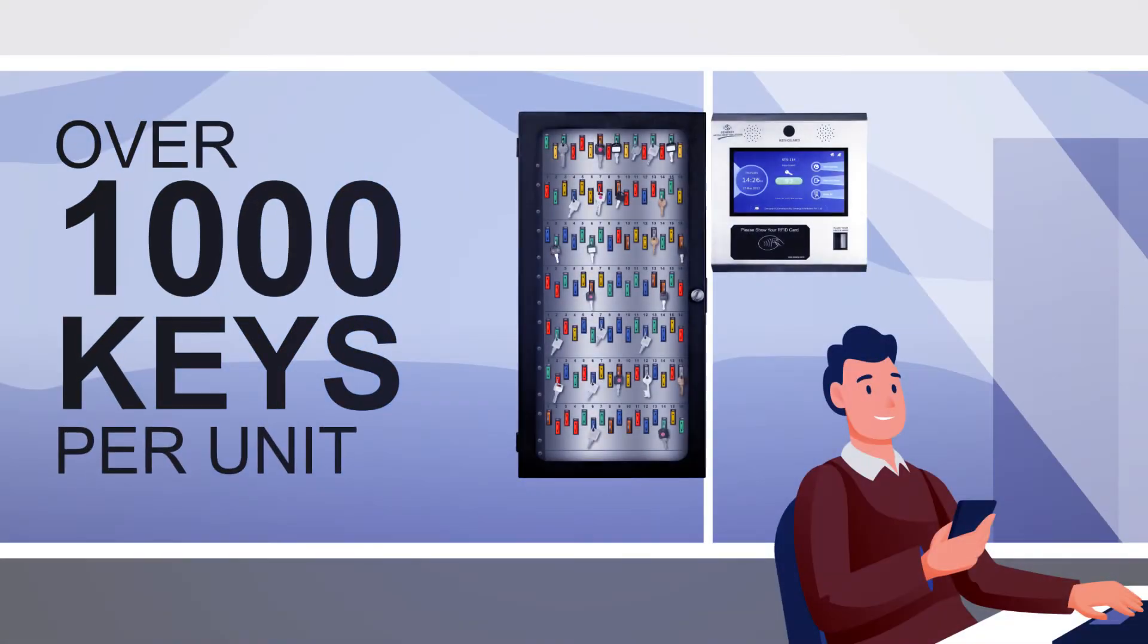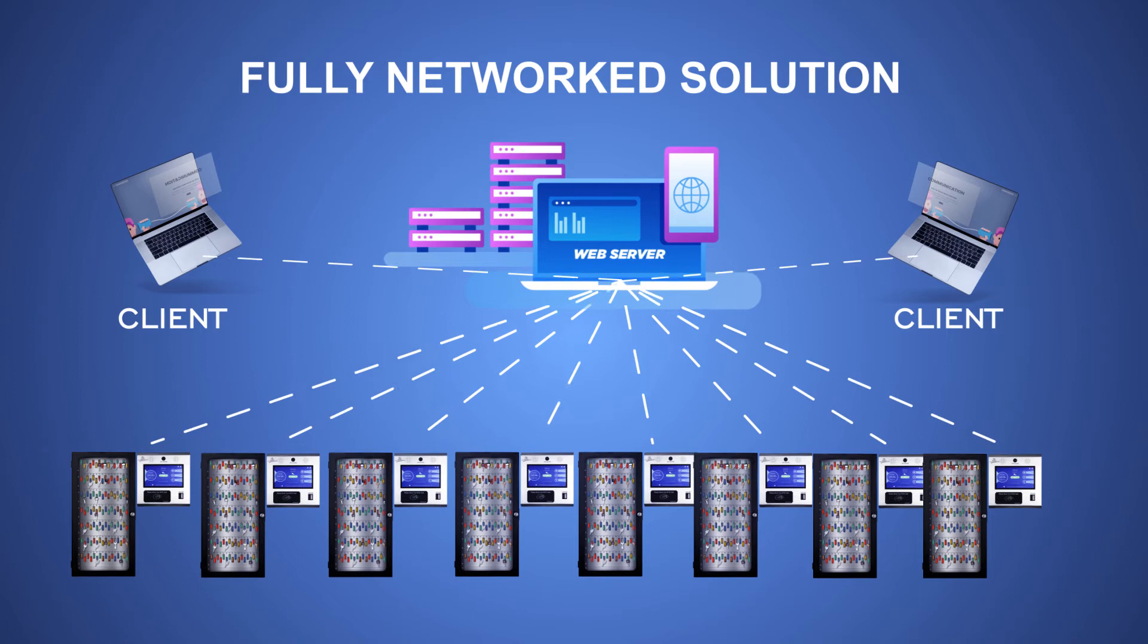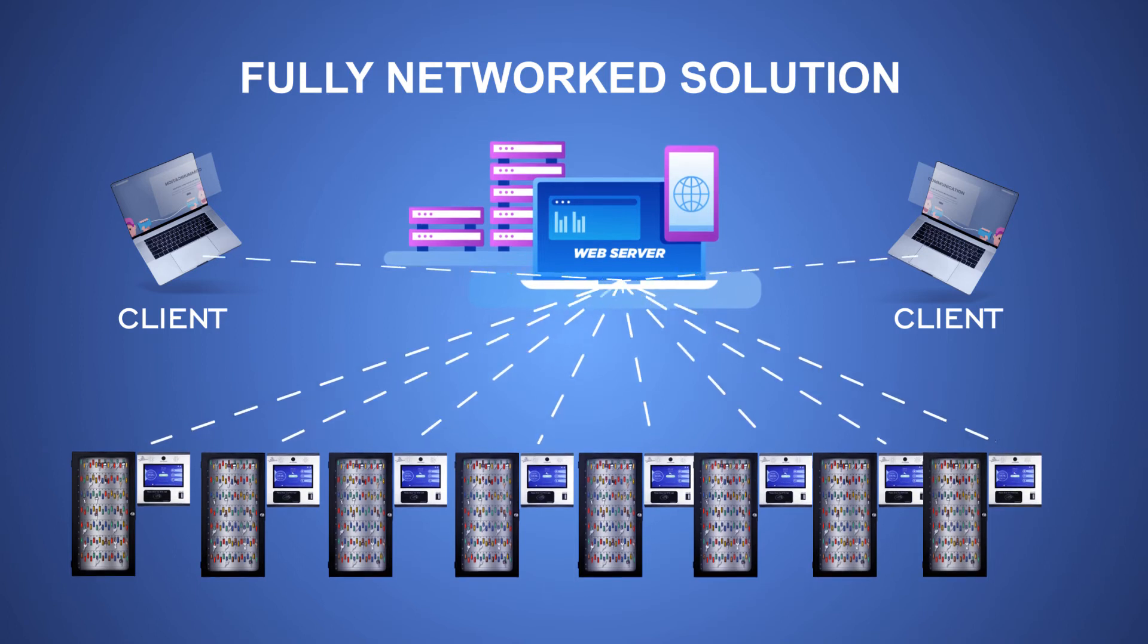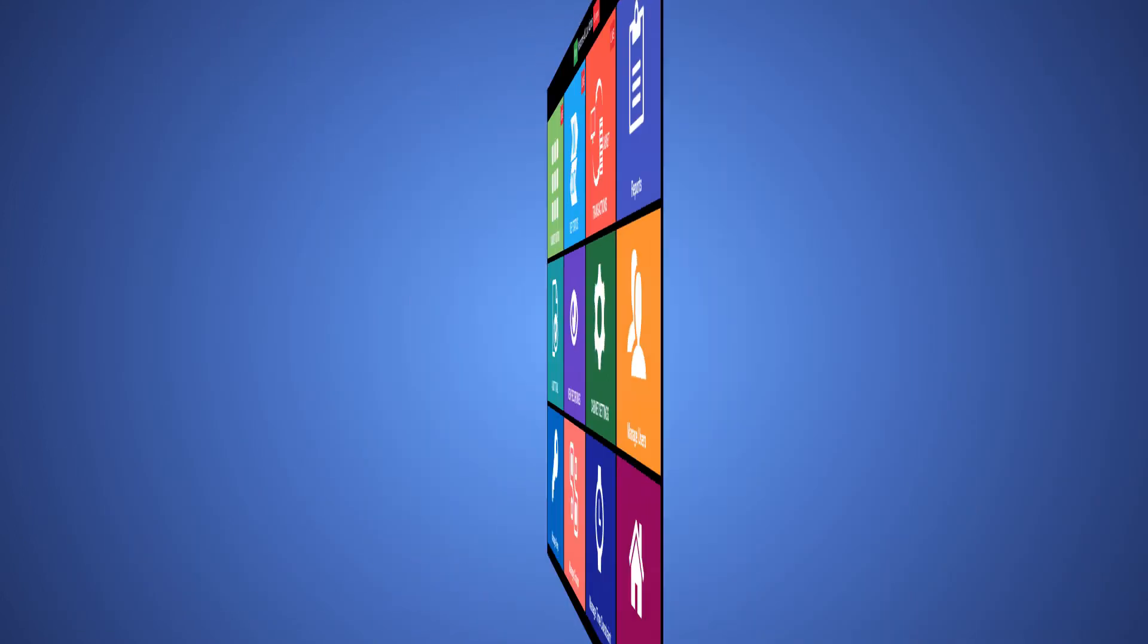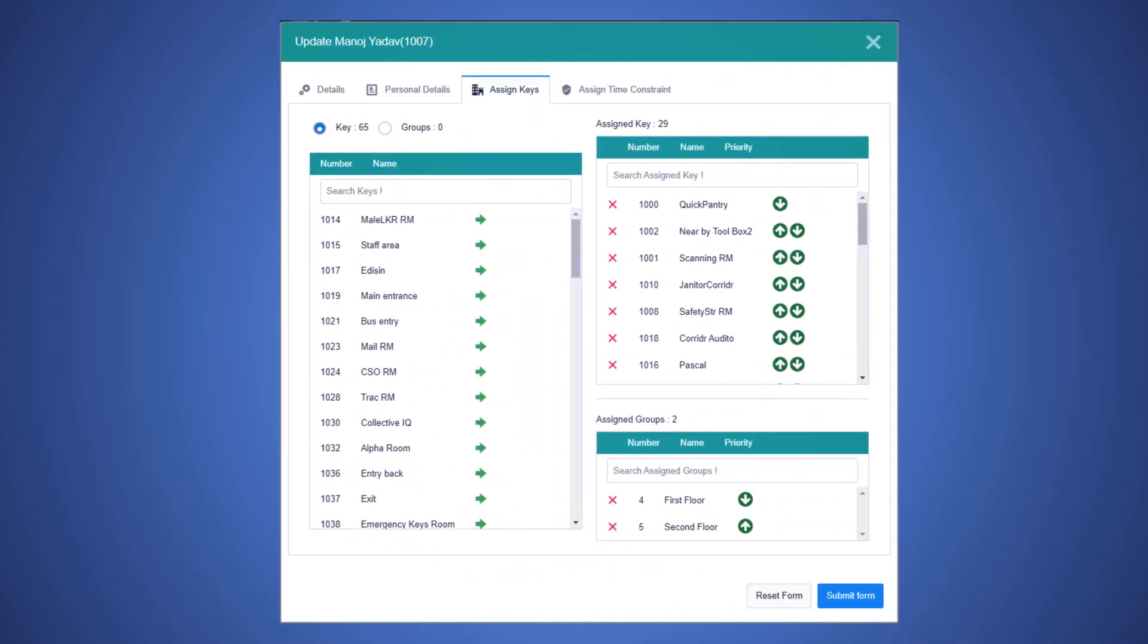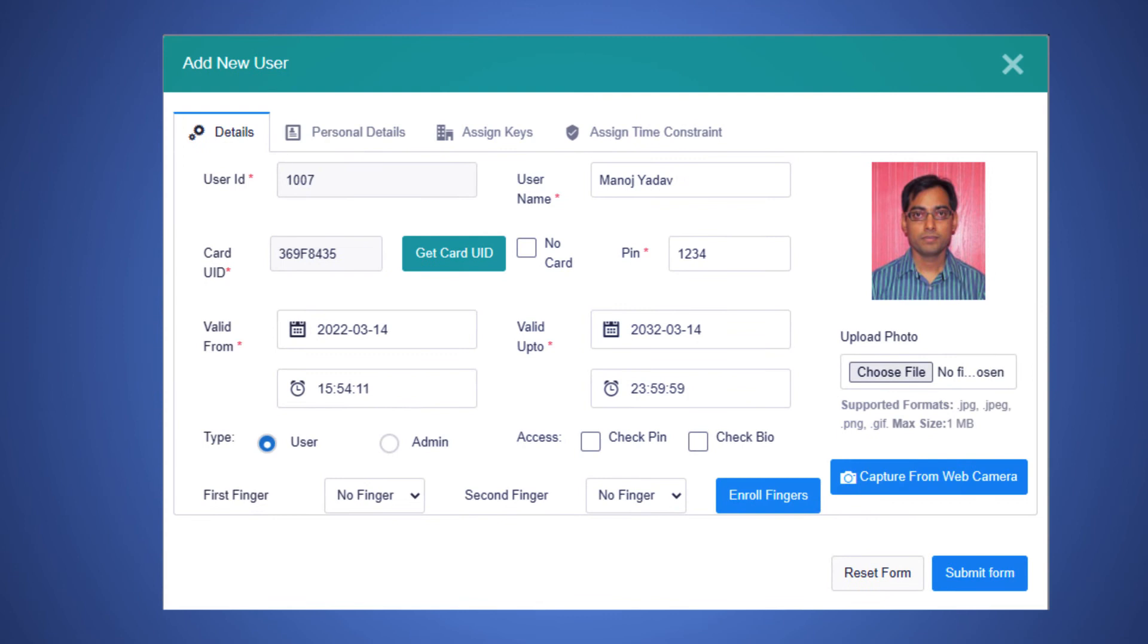The KeyGuard KMS can secure over 1,000 keys per unit and can also be used as a fully networked solution with multiple cabinets. The KeyGuard web-based app is used for centralized management and control of all keyguards, as well as to configure users and keys to provide authorization.